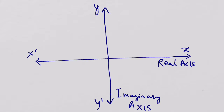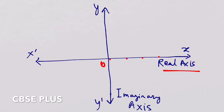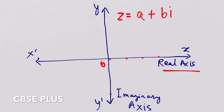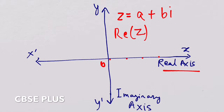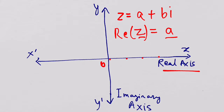This plane has two axes. The x-axis is called the real axis, and the y-axis is called the imaginary axis. The x-axis represents the real line, so any point on the x-axis represents a real number. For a complex number a plus bi, the real part 'a' is represented on the real axis.